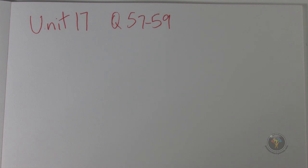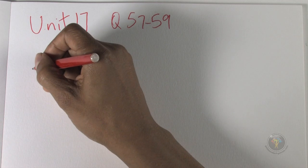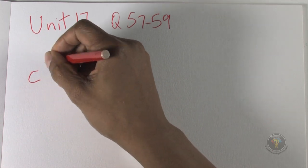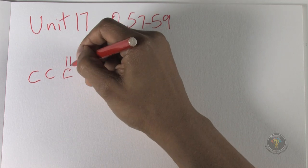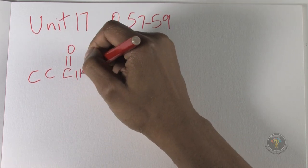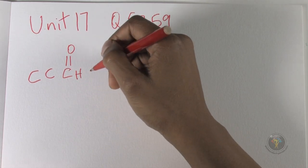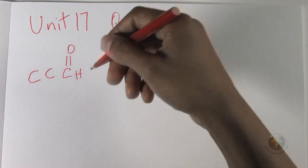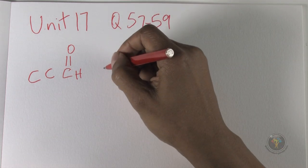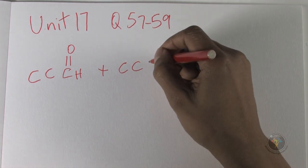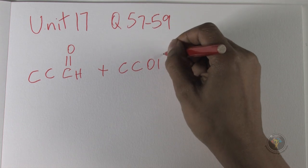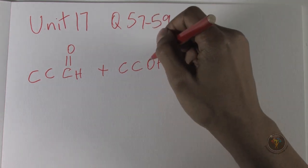So I draw propanol. Prop means three carbons, al means it's an aldehyde, so it has a carbonyl group and ends with a hydrogen. I'm not going to put in all the hydrogens just to save time.